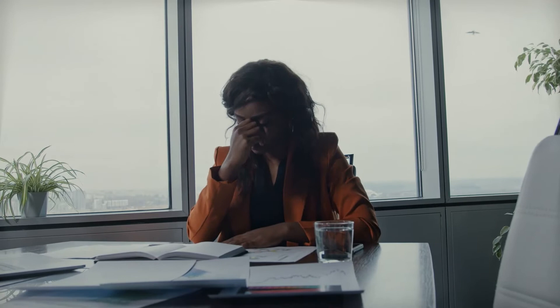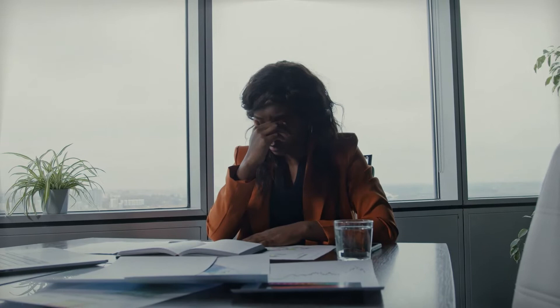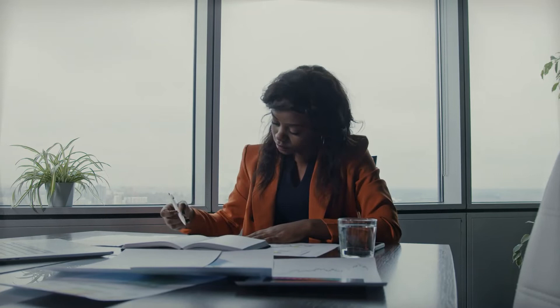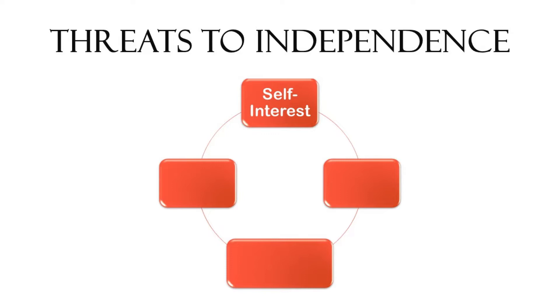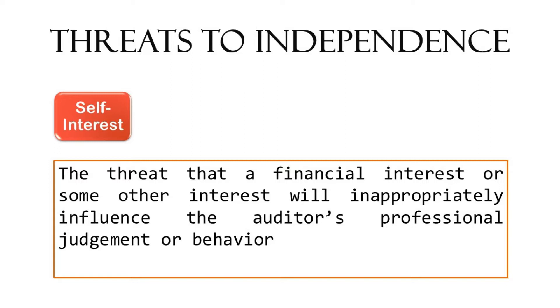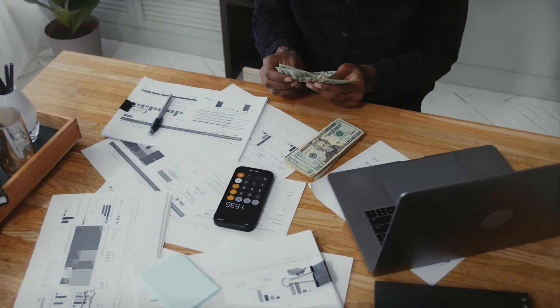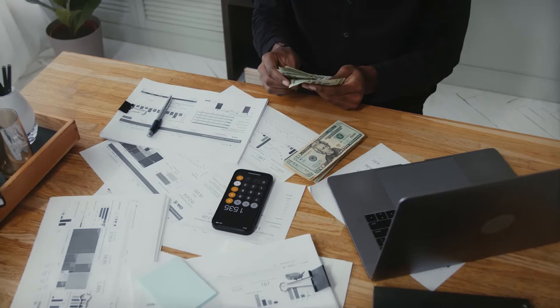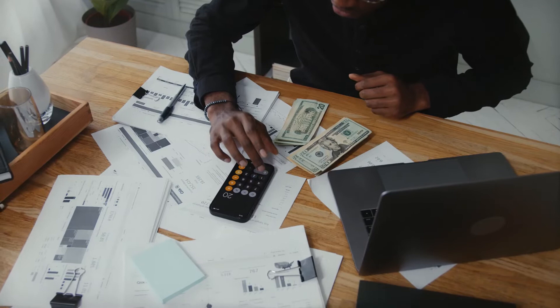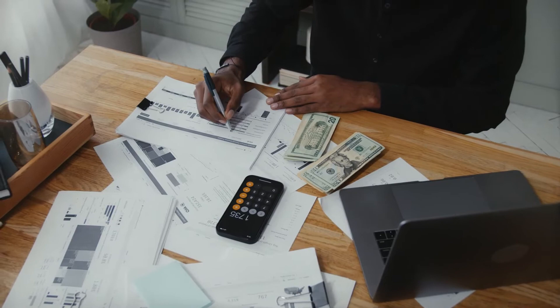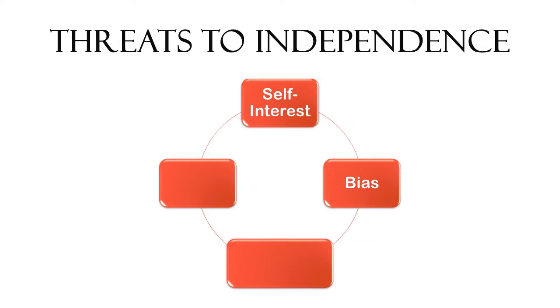Threats to independence are circumstances that make it difficult or inhibit internal auditors from applying independence to their day-to-day audit activities. Threats can affect the entire internal audit department, a specific engagement team, or an individual internal auditor. The self-interest threat is the threat that a financial interest or some other interest will inappropriately influence the auditor's professional judgment or behavior. For example, if a manager receives a bonus for not having any issues identified in the audit report, he or she could unethically give the internal auditors a percentage of that bonus, persuading them to overlook issues.